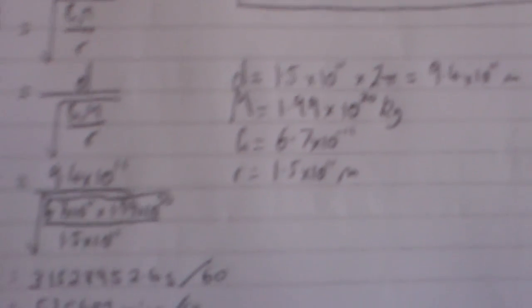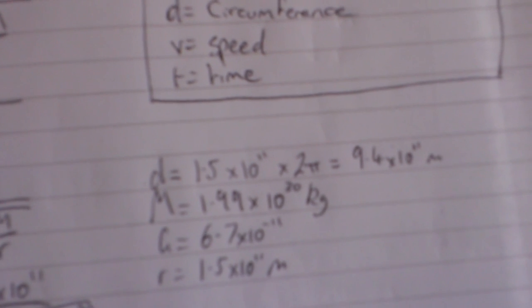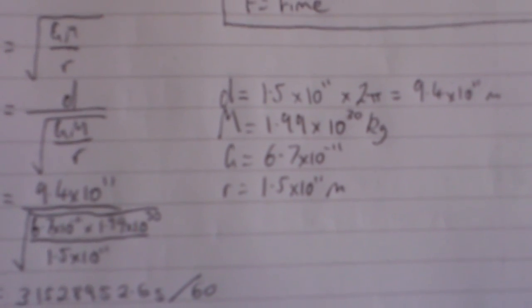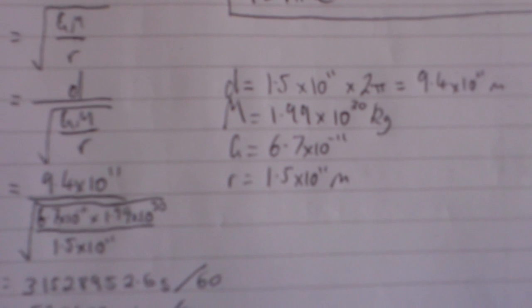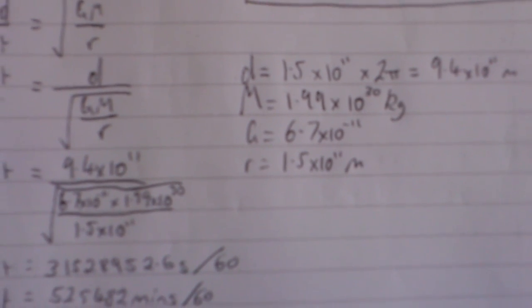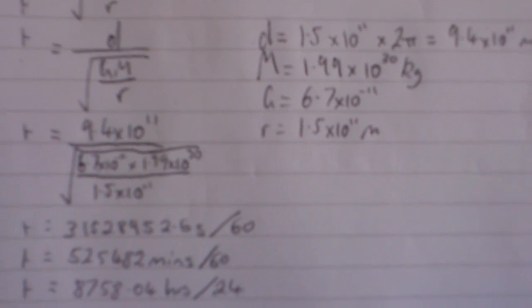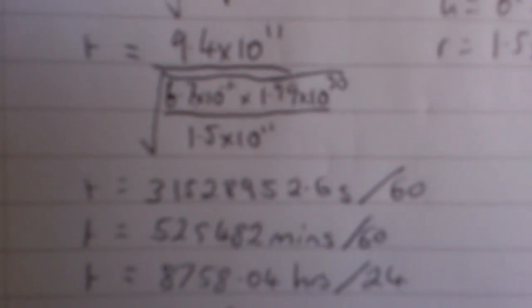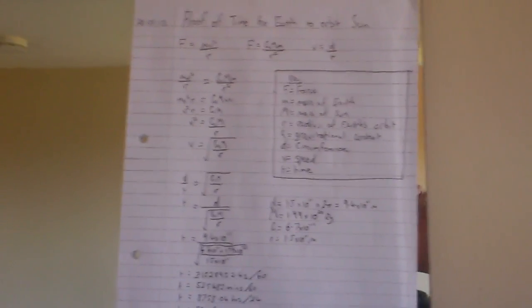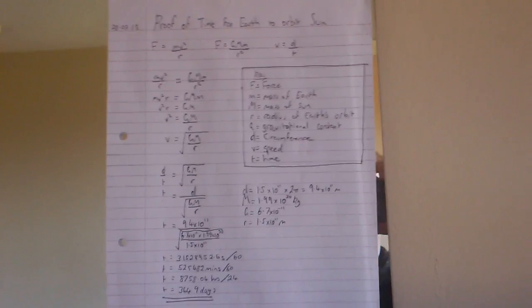I've got the values, just searching them online. So the circumference is 9.4 times 10 to the power of 11 meters. The mass of the Sun is 1.99 times 10 to the power of 30 kilograms. Gravitational constant is 6.7 times 10 to the negative 11. And the radius of the Earth is 1.5 times 10 to the power of 11 meters. So plug in those values, plug it into the calculator. And that gives you this answer, big number in seconds, divided by 60 to get it in minutes, divided by 60 to get it in hours, divided by 24. And there you have the final answer, 364.9 days. And that's how you prove that the Earth takes 365 days to orbit the Sun.